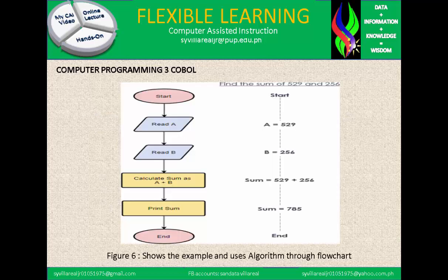In Figure 6, we have an example of an algorithm through a flowchart. On the left side, we have: start, read A, read B, calculate sum as A plus B, print sum, and end. This answers the question: find the sum of 529 and 256. So the value is: start, A equals 529, B equals 256, sum equals 529 plus 256, then the sum is 785. And that's the end.